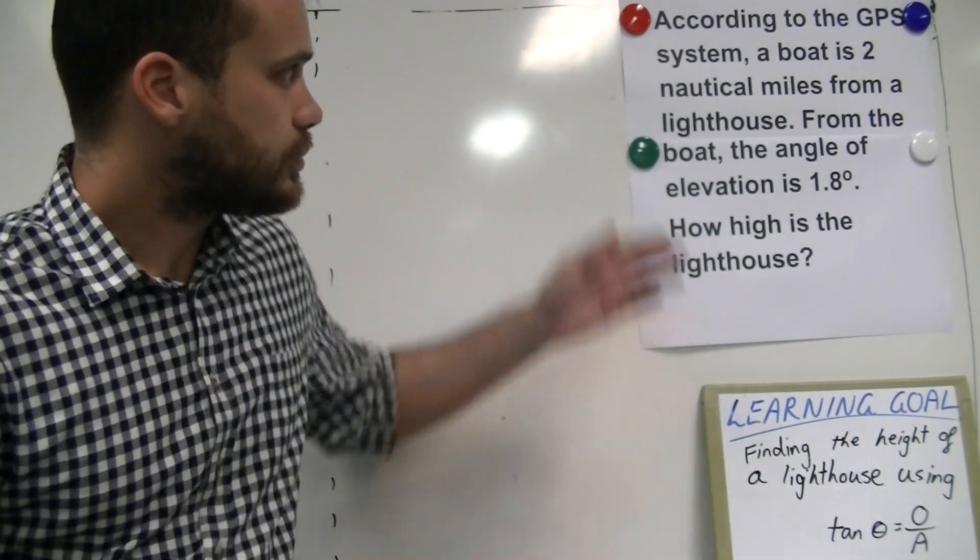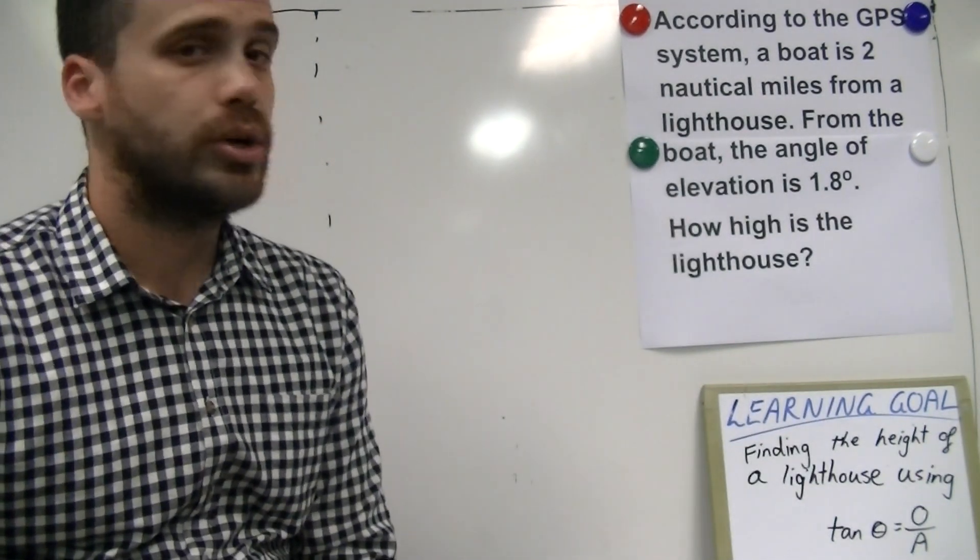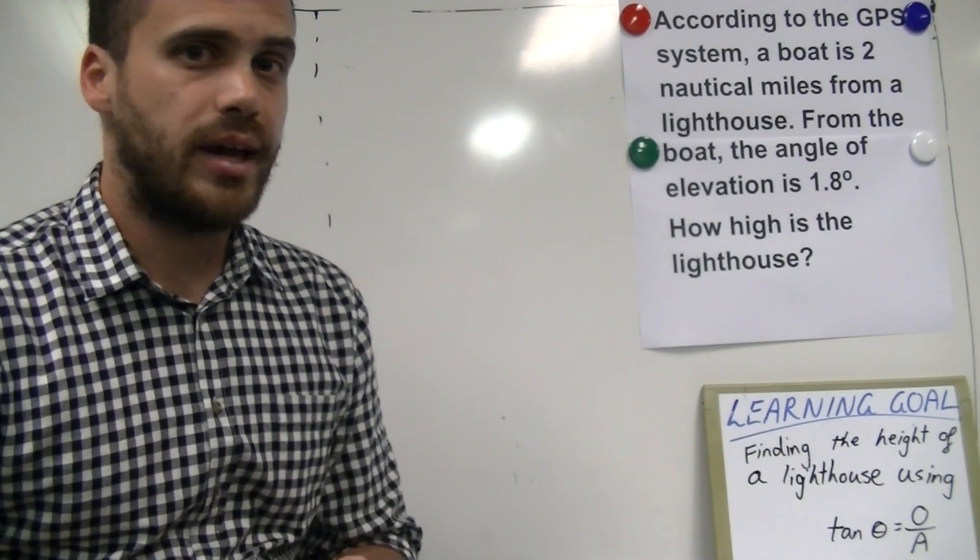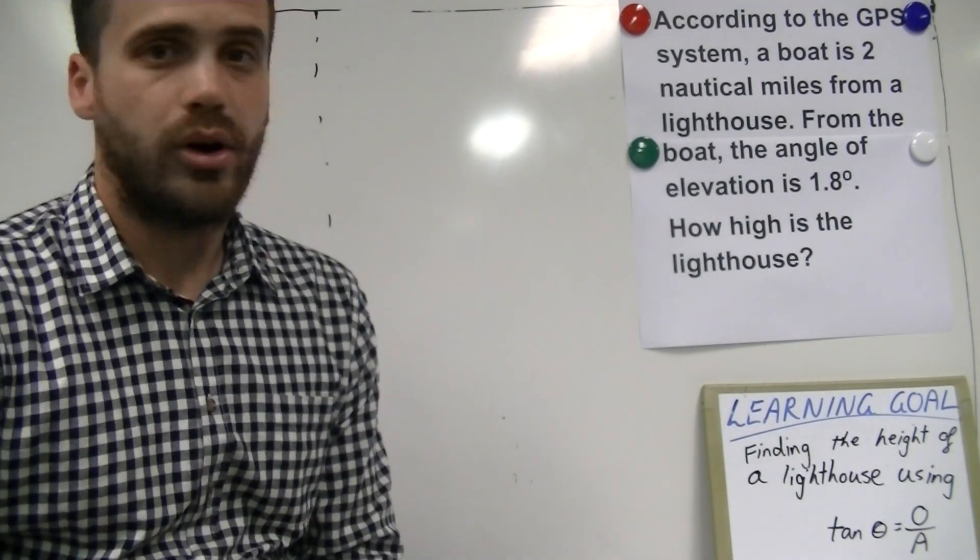Looking at the question, according to the GPS system, a boat is 2 nautical miles from a lighthouse. From the boat, the angle of elevation is 1.8 degrees. How high is the lighthouse?